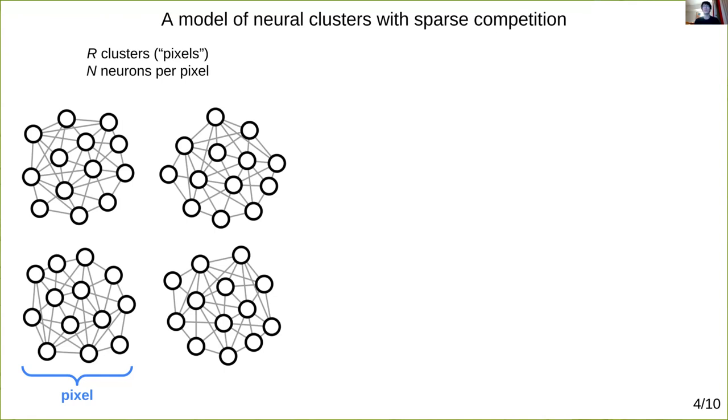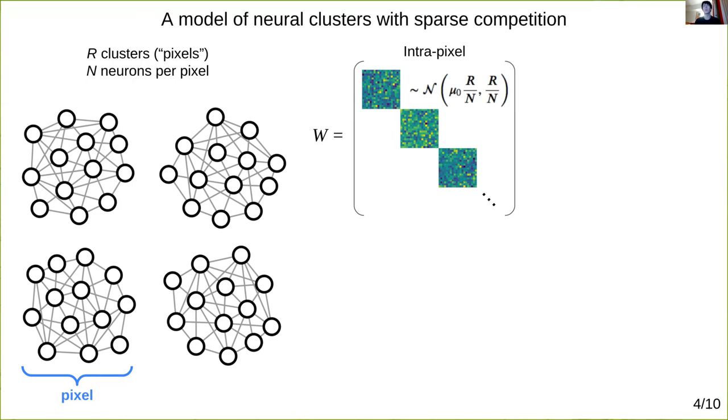All right, so let there now be n neurons in each cluster or pixel, and randomly connect the neurons within each pixel corresponding to this block diagonal connection matrix W.